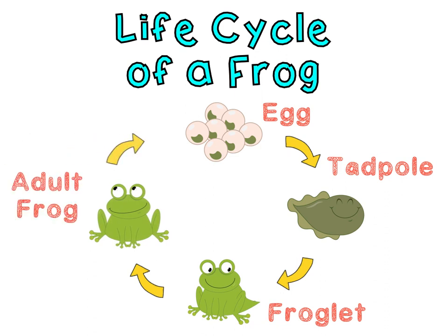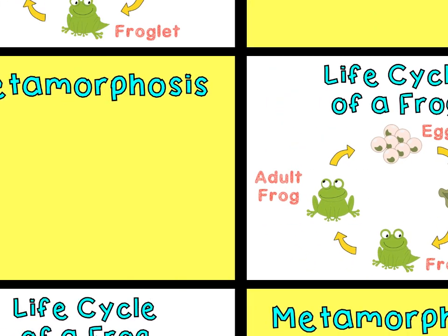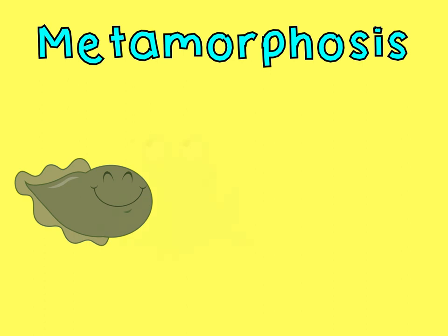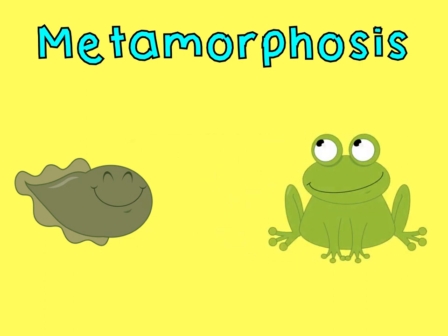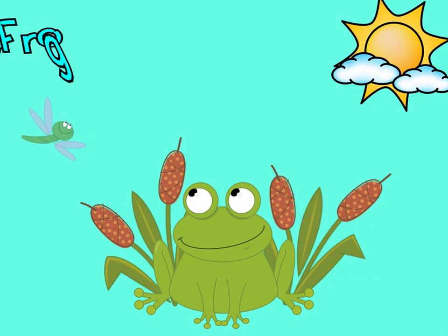The life cycle of a frog goes through a process called metamorphosis. Metamorphosis is the drastic or extreme transformation an animal goes through to look like an adult. You can tell when an animal goes through metamorphosis when the young look completely different from the adult. In the case of the frog, when the egg hatches, a tadpole emerges looking completely different from an adult — because it will have to change a lot to look like its parent.